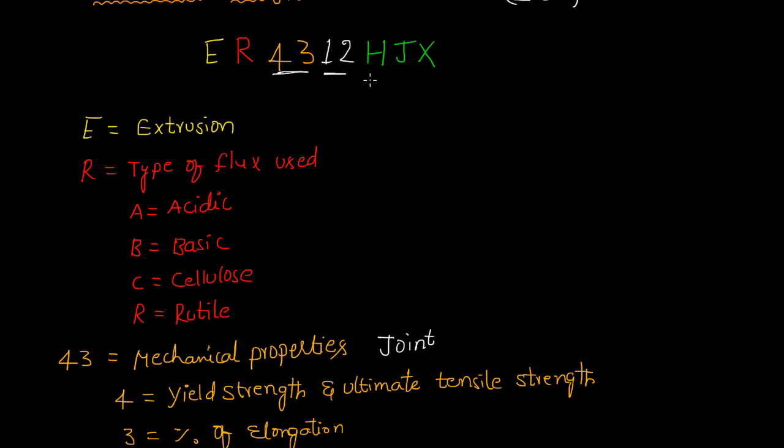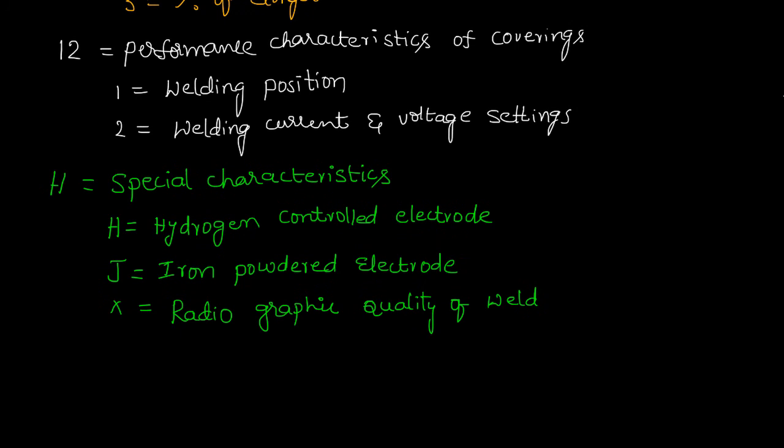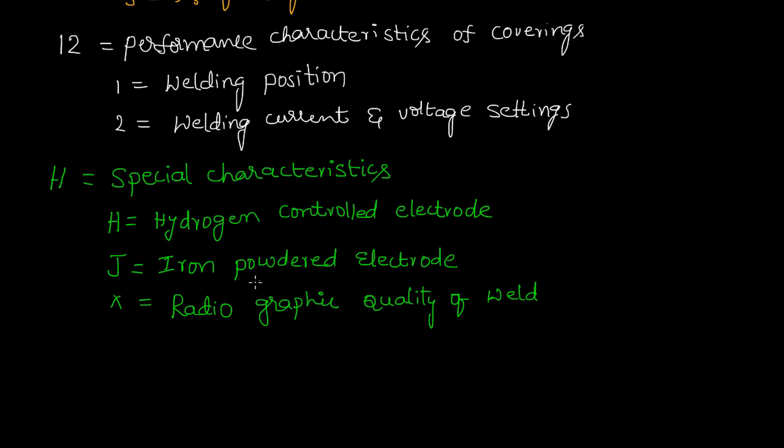The third set may have one, two, or three letters based on requirements. These letters indicate special purposes. H means hydrogen controlled electrode, J means iron powder electrode, and X means radiographic quality of weld.